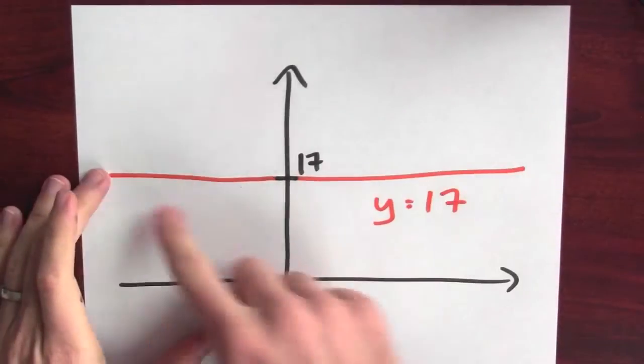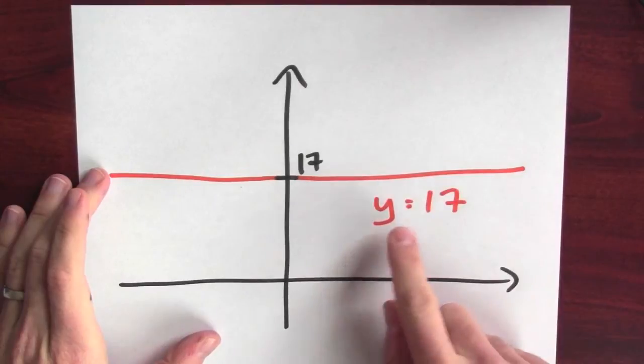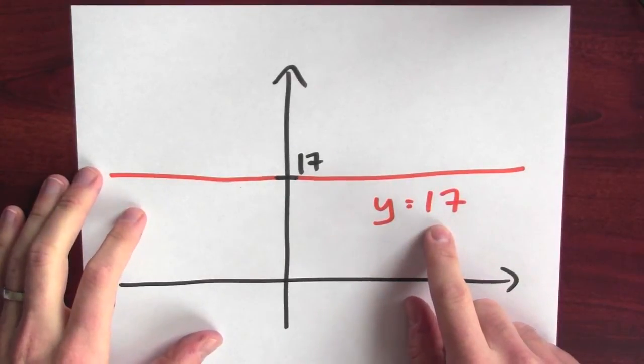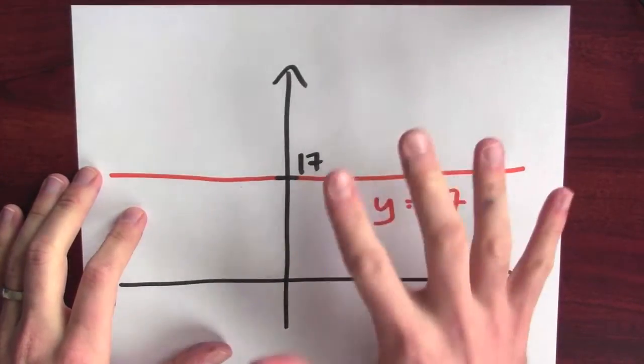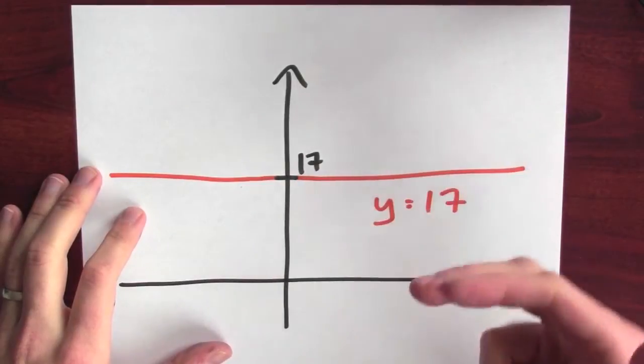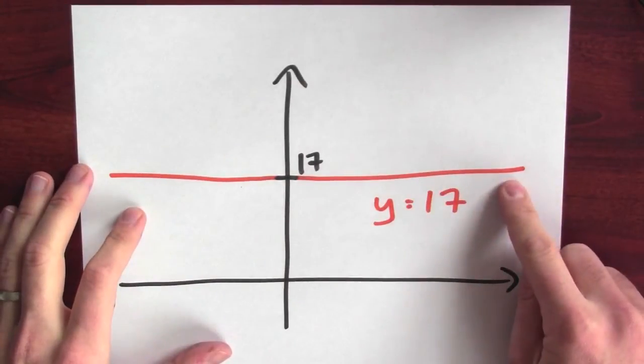There's even more, dare I say it, extreme versions of this. Here I've graphed the constant function y equals 17. 17 is both a global maximum and a global minimum for this constant function.